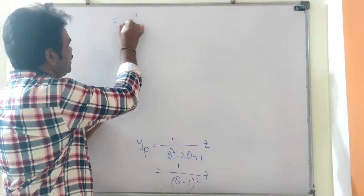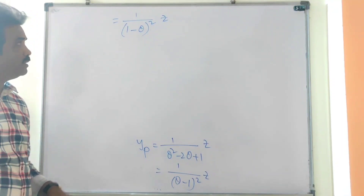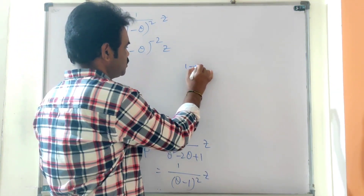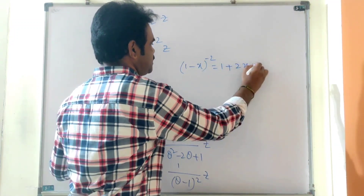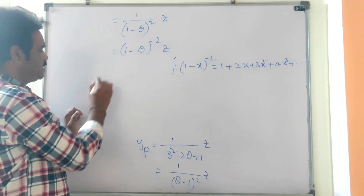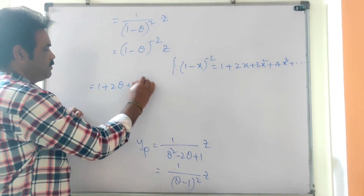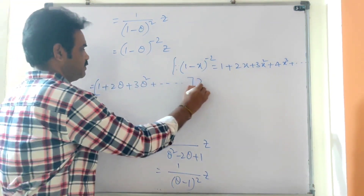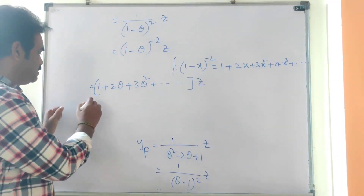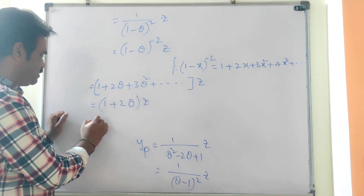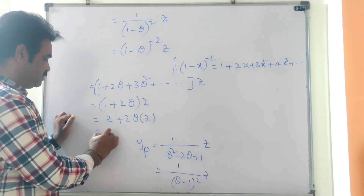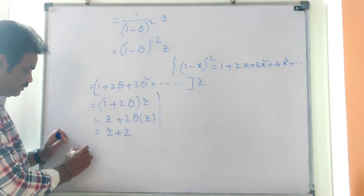This can be written as (1−θ)^(−2) · z. Using the expansion 1/(1−x)² = 1 + 2x + 3x² + ..., this becomes (1 + 2θ + 3θ² + ...) · z. Since differentiating z once gives 1 and further derivatives are 0, we expand up to θ only: = z + 2θ(z) = z + 2·1 = z + 2. So yp = z + 2.